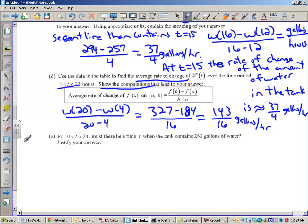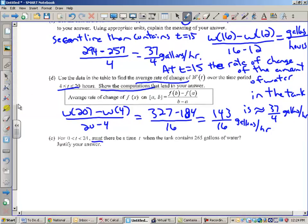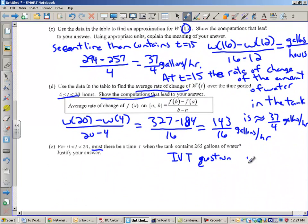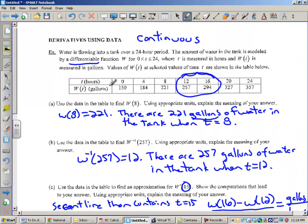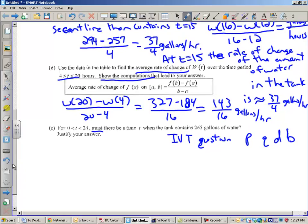All right, last one here. For any time period from 0 to 24, must there be a time when the tank contains 265 gallons of water? This is an IVT question. Anyway, I do have this problem though. Let's take a look here. The gallons, this is differentiable, which means this is continuous. That means that we're going to take on all Y values from 150 to 357. So, let's take a look at what the question is asking. 265. So, how would I justify my answer? I would say, yes, the function W(t) is continuous.